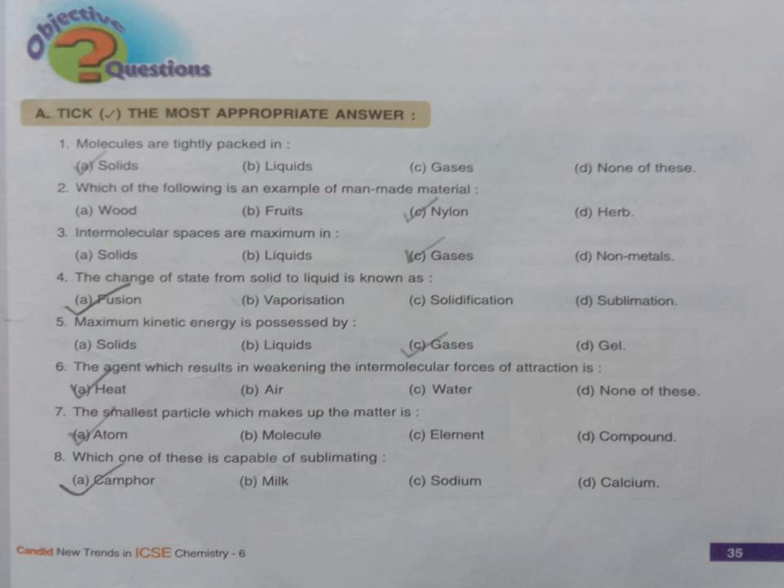Number 6, the agent which results in weakening of the intermolecular force of attraction is heating. When we heat a substance, the intermolecular force of attraction weakens. Number 7, the smallest particle which makes up the matter is atom.